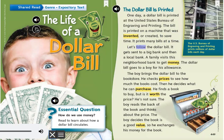Let's follow the dollar bill. It gets sent to a big bank and then a local bank. A family visits this neighborhood bank to get money. The dollar bill goes to a boy for his allowance.